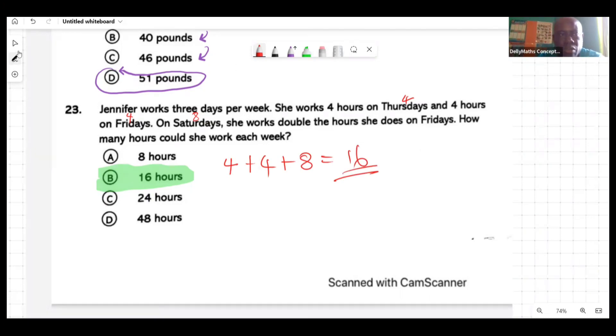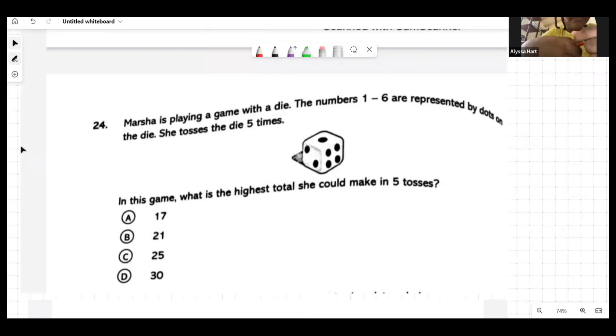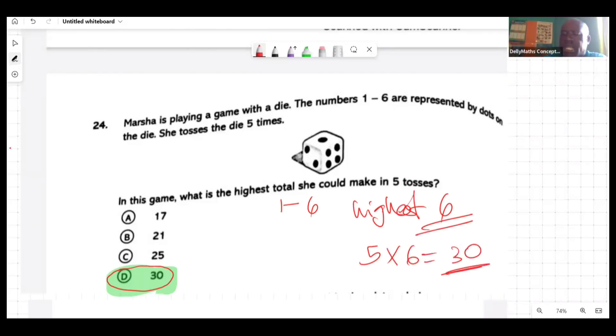Marcia is playing a game with a die. The numbers one to six are represented by dots on the die. She tosses the die five times in this game. What is the highest total she could make in five tosses? You're suggesting that the answer is 30, sir. Why 30? How I arrived at my answer is I looked at the numbers on the die. It said the numbers are one to six. I looked at the highest number, which was six, and I times it by five because she did five tosses and we want to know the highest number. Alright, good. Exactly. So you're suggesting that if you want the highest number, you're going to have to pick that highest and then see how many times you would have gotten that same number. You would have gotten six five times, Remaine. That's the same answer I got as well. Very good.